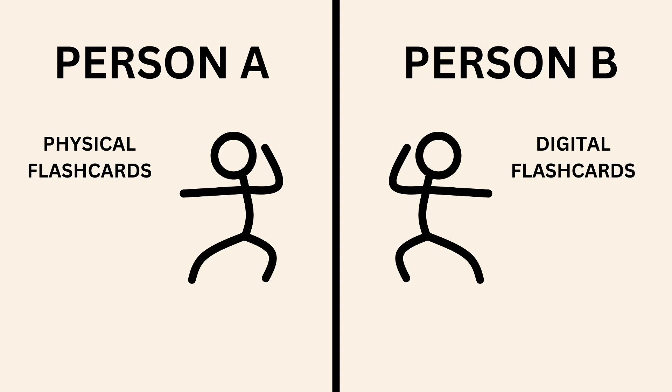Let's imagine two people — person A and person B. They're both revising for their GCSE Biology Paper 1. Person A wants to cover the whole syllabus using physical flashcards, while person B wants to do the same thing but using digital flashcards instead. Since the average typing speed is 3 times as fast as the average writing speed, if it takes person A 15 hours to cover all the content, it's going to take person B only 5 hours. When it comes to GCSE Biology Paper 1 alone, person B has saved 10 hours.